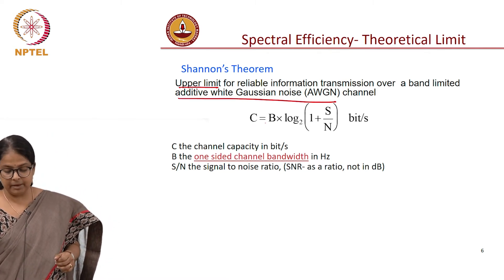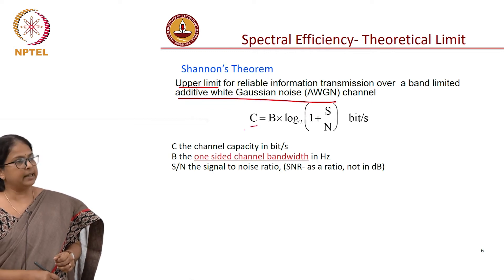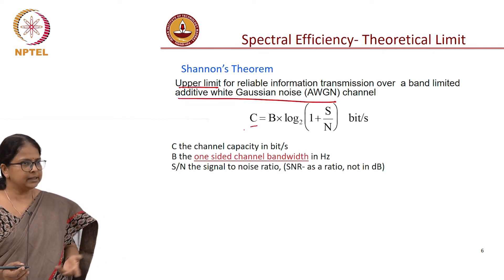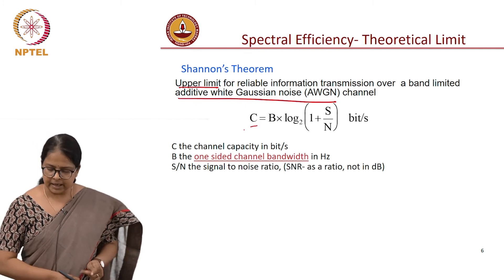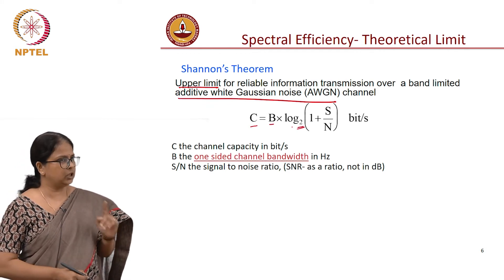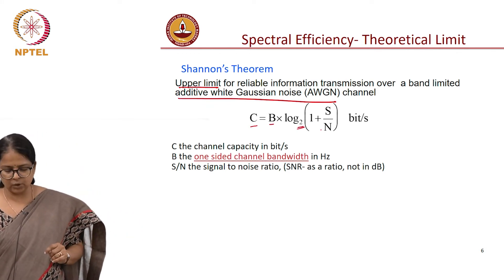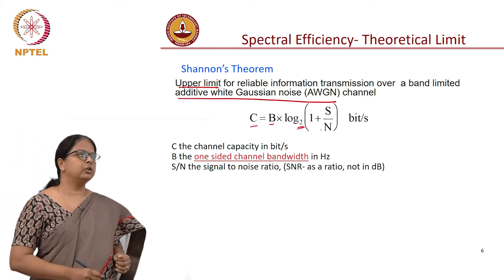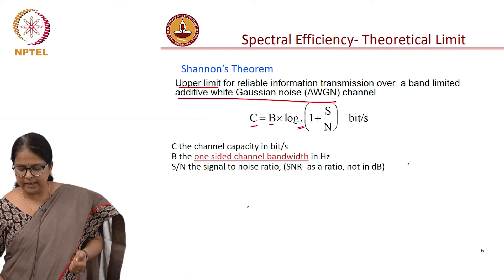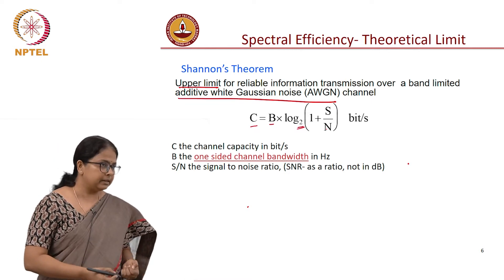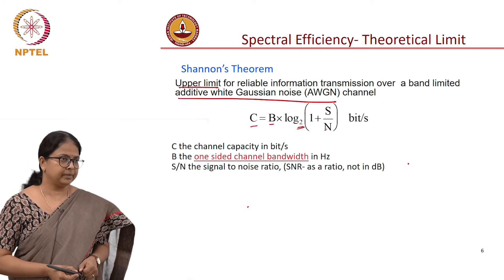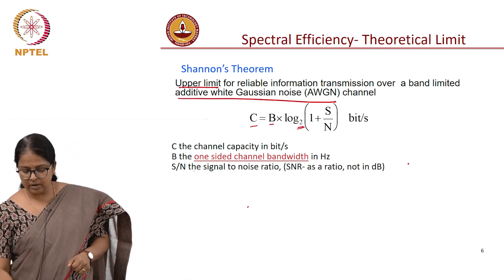the maximum spectral efficiency, the maximum information that can be carried, which means the maximum bit rate that you can transport, the theoretical maximum. We are not deriving this, we will just take the theorem as it is. It is given by B times log to the base 2. Notice, it is log to the base 2, not log to the base 10. 1 plus S over N, where S over N is your signal-to-noise ratio, which is signal power divided by the noise power. In this formula, it is not in dB. Typically we talk about SNR in dB, but when you are using this formula, take care you are using it in ratio and not in decibels. And what is this B? B is your one-sided channel bandwidth.